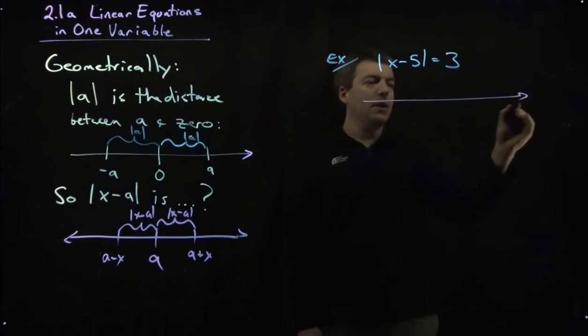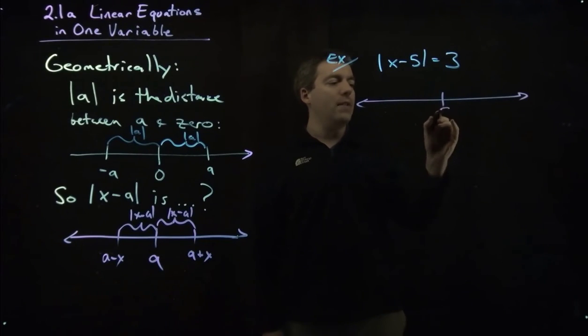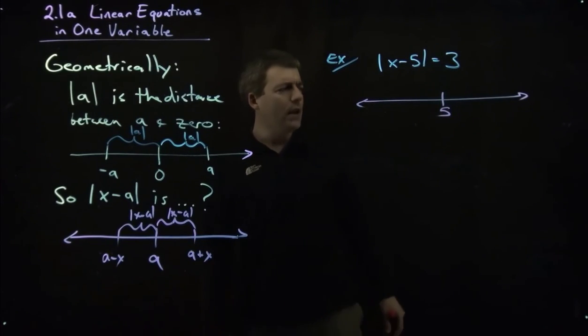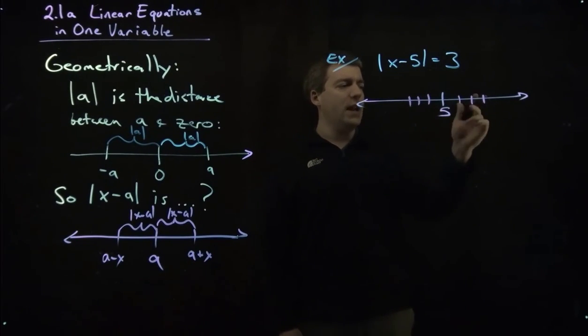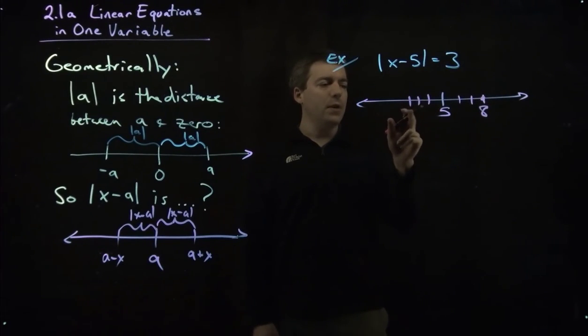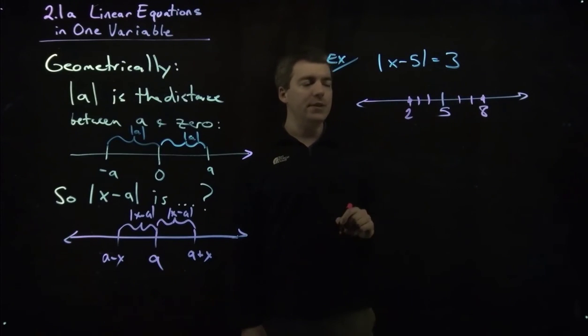So geometrically, what we're doing is we're looking at 5, and we're saying, okay, what numbers are 3 away from 5? Well, 5, 6, 7, 8. 8 is 3 units away. Also 5, 4, 3, 2. 2 is also 3 units away.